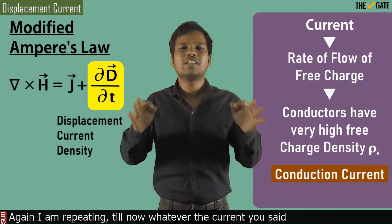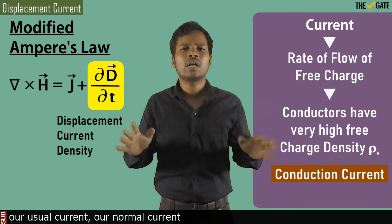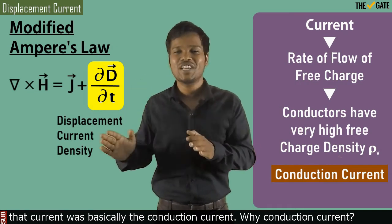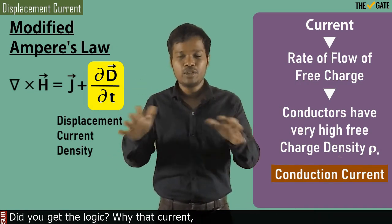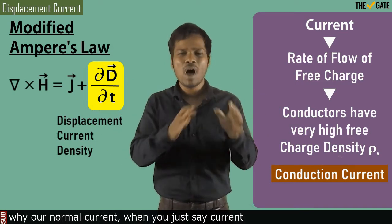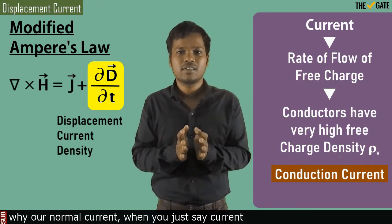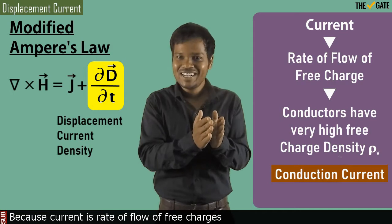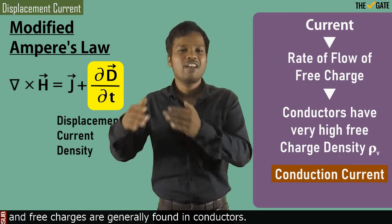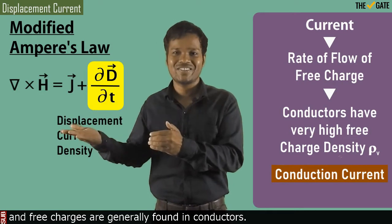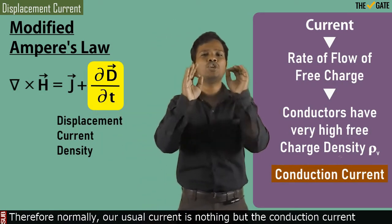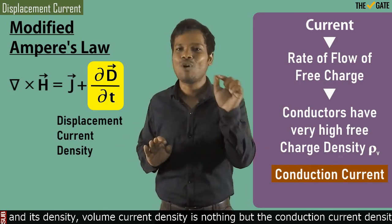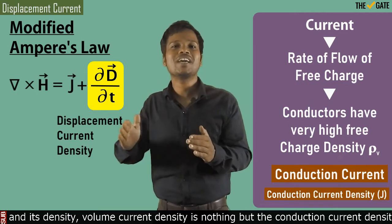Again, repeating: till now, whatever current you referred to — our usual current, our normal current — that current was basically the conduction current. Why conduction current? Because current is the rate of flow of free charges, and free charges are generally found in conductors. Therefore, normally our usual current is nothing but the conduction current. And its density — volume current density — is nothing but the conduction current density.